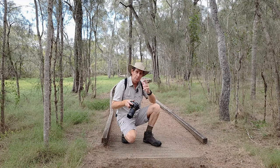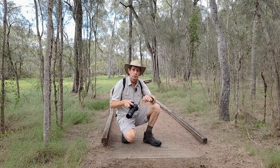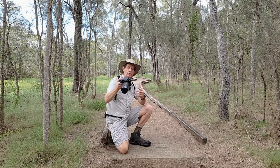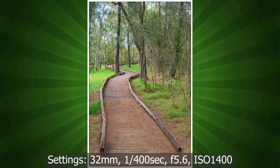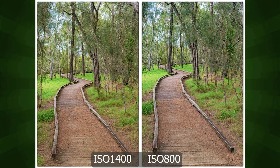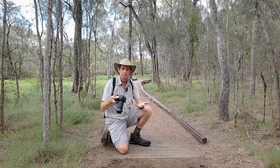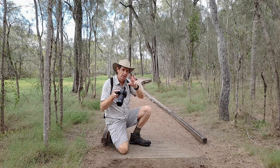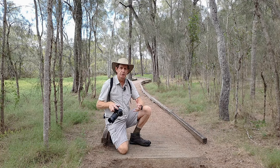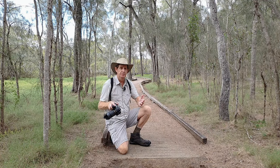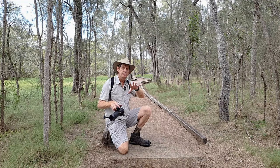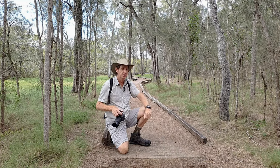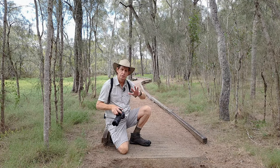I went back to the same spot and changed to f/5.6 — the ISO dropped to only 800. Looking at them side by side: the left image at ISO 1400, the right at ISO 800. Can you really tell the difference? I can't, unless I'm pixel peeping. For landscape photography I zoom in to 50% — if the photo looks good at 50%, that's it. So we've got three or four nice compositions already.